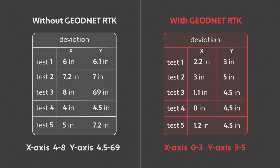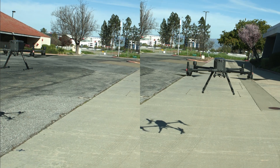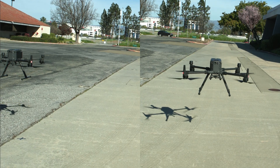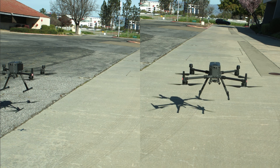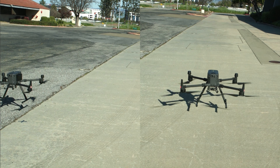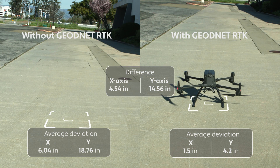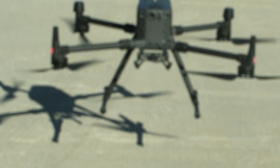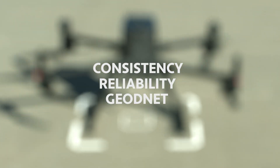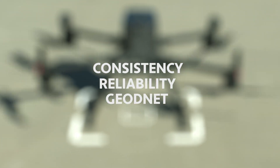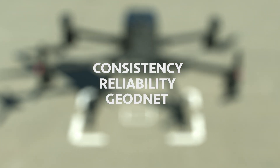The disparity in average deviation data with and without RTK is substantial. On the x-axis, the difference is 4.54 inches, while on the y-axis it reaches as high as 14.56 inches. GeoNet's RTK network undeniably ensures consistency and reliability in RTK performance.